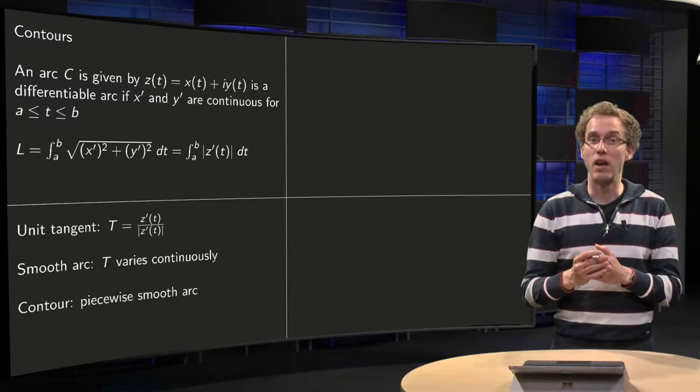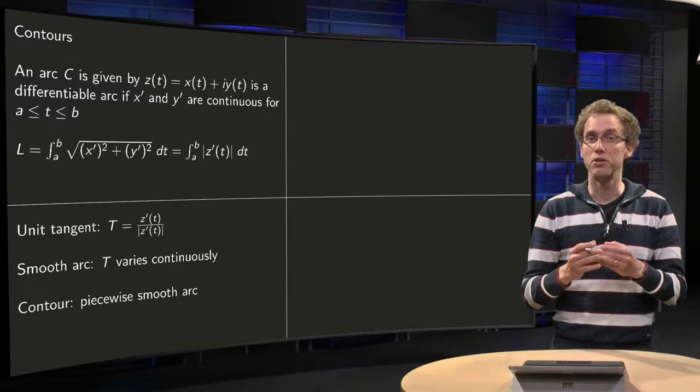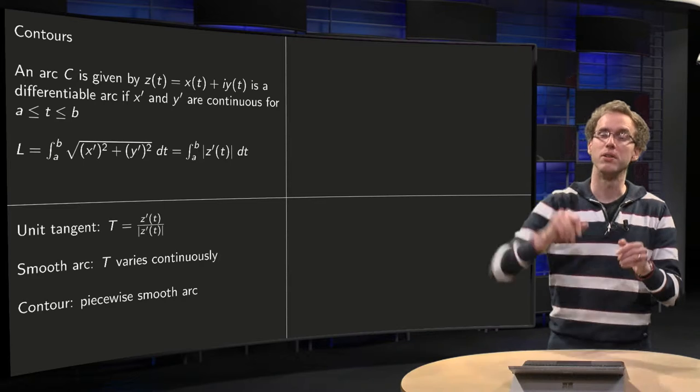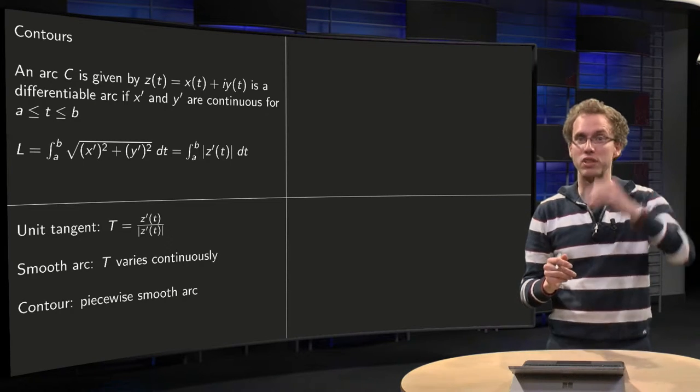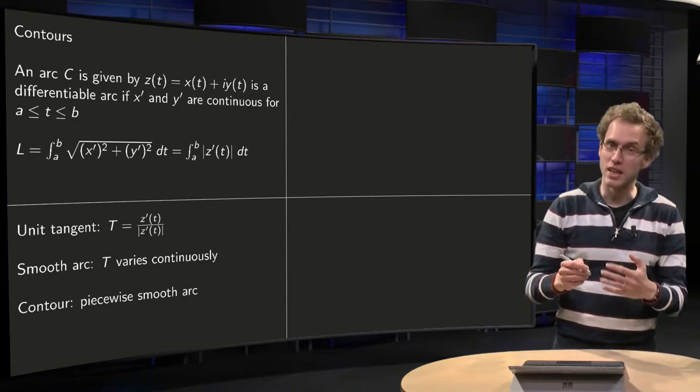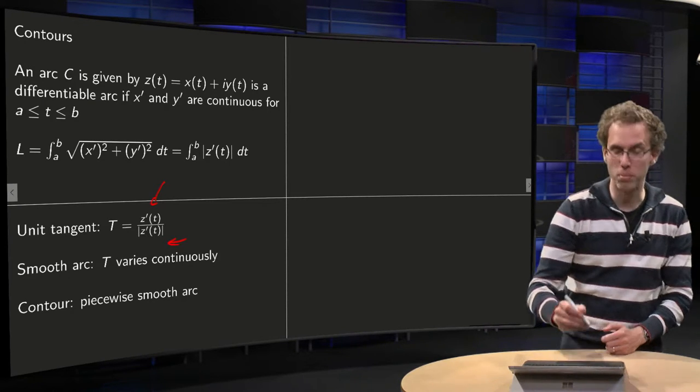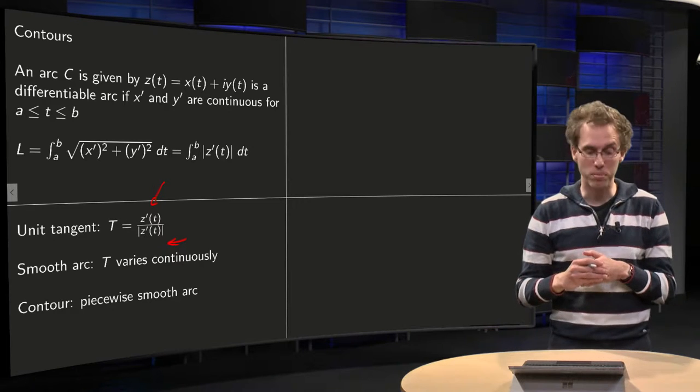Now you can compute the tangent to a curve. If you have r of t, some real curve, the tangent was given by r' of t. And similarly here, our unit tangent will be z' of t, and to normalize you divide by the norm of z' of t.